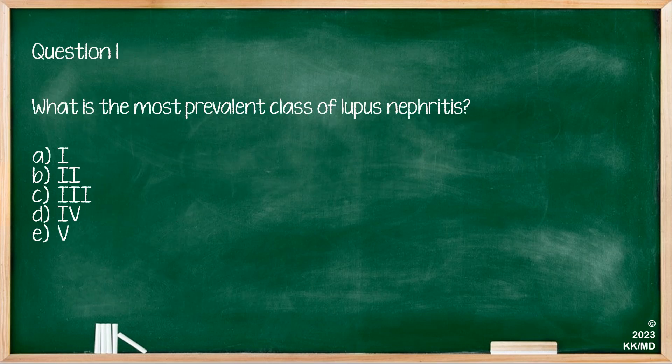Question one: what is the most prevalent class of lupus nephritis? A: 1, B: 2, C: 3, D: 4, E: 5. If you remember, the most common class of lupus nephritis is class IV. Therefore, option D would be correct.